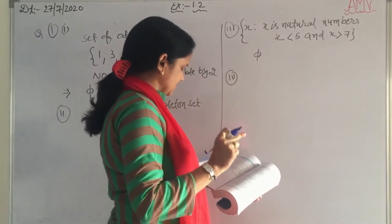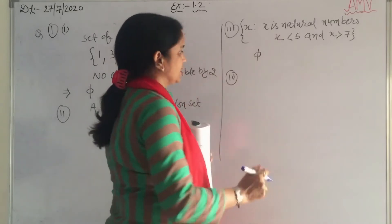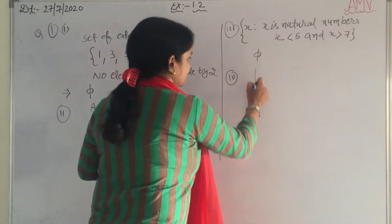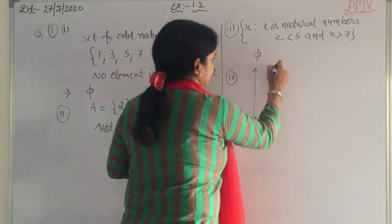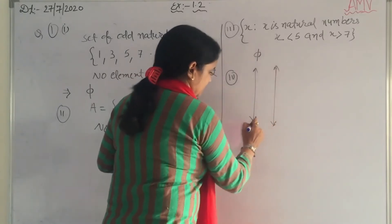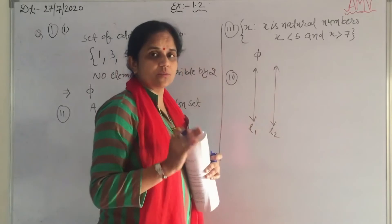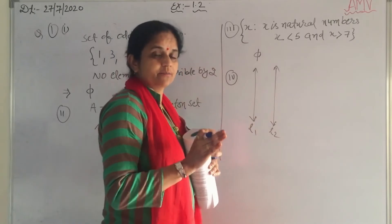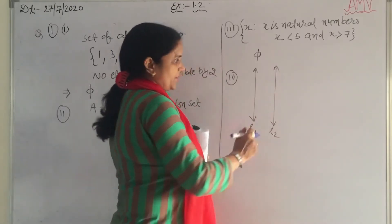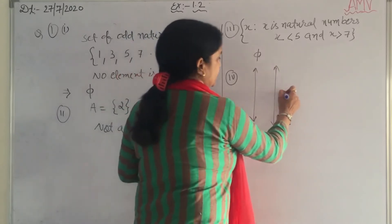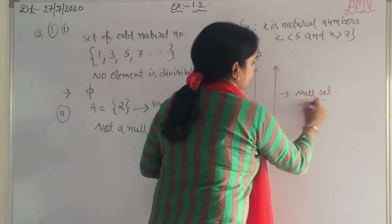Next: what is the point common to any two parallel lines? If there are two parallel lines L1 and L2, there is no common point. Parallel lines don't have any common point. So this is also a null set.